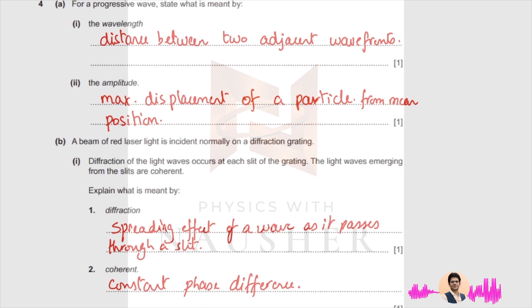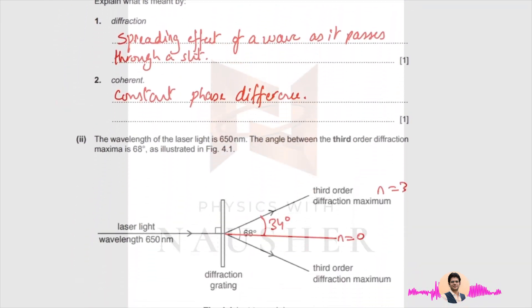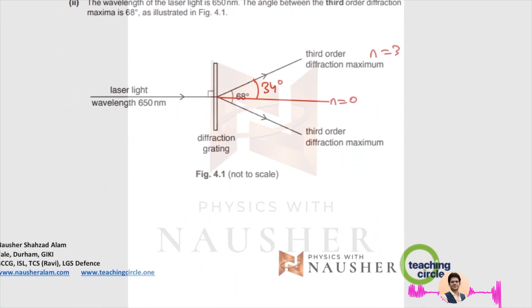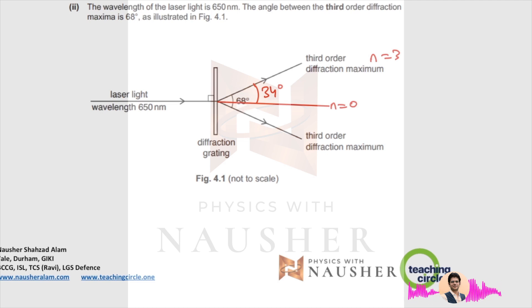Now, you have laser light of wavelength 650 nanometers and the angle between third order diffractions is 68 degrees. The angle has to be taken from the center line, so the angle is going to be 34 degrees.